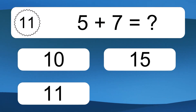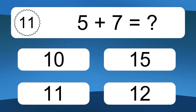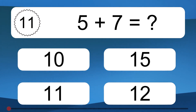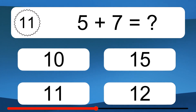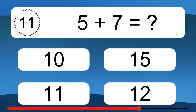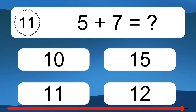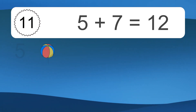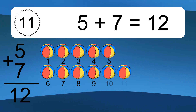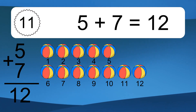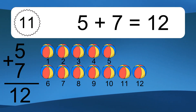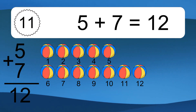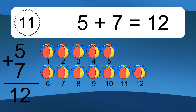5 plus 7 equals what? 5 plus 7 equals 12. Let's count it. 1, 2, 3, 4, 5, 6, 7, 8, 9, 10, 11, 12.